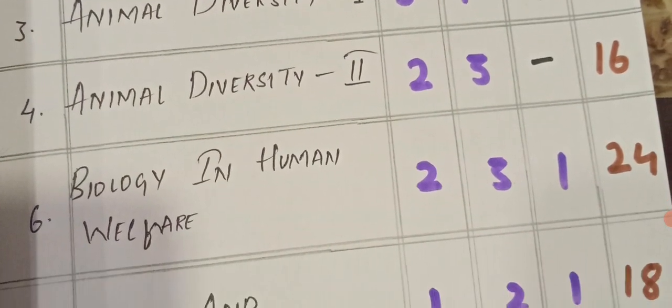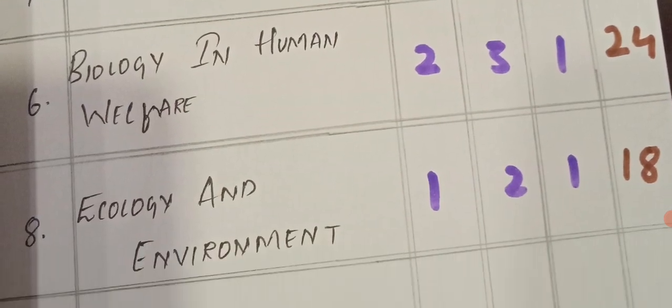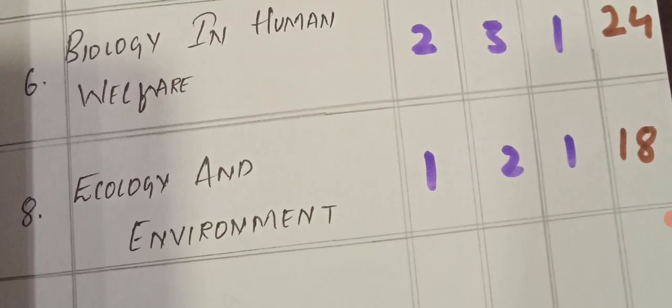Biology in Human Welfare: 2 VSAQs, 3 SAQs, and 1 LAQ. Next, Ecology and Environment, the last chapter: 1 VSAQ, 2 SAQs, and 1 LAQ.